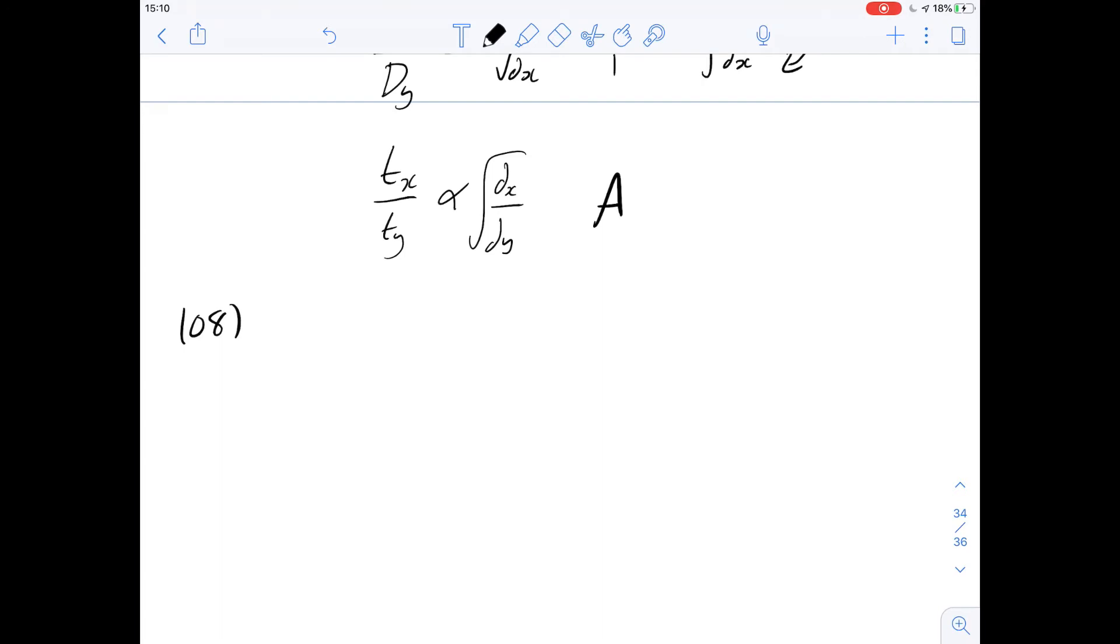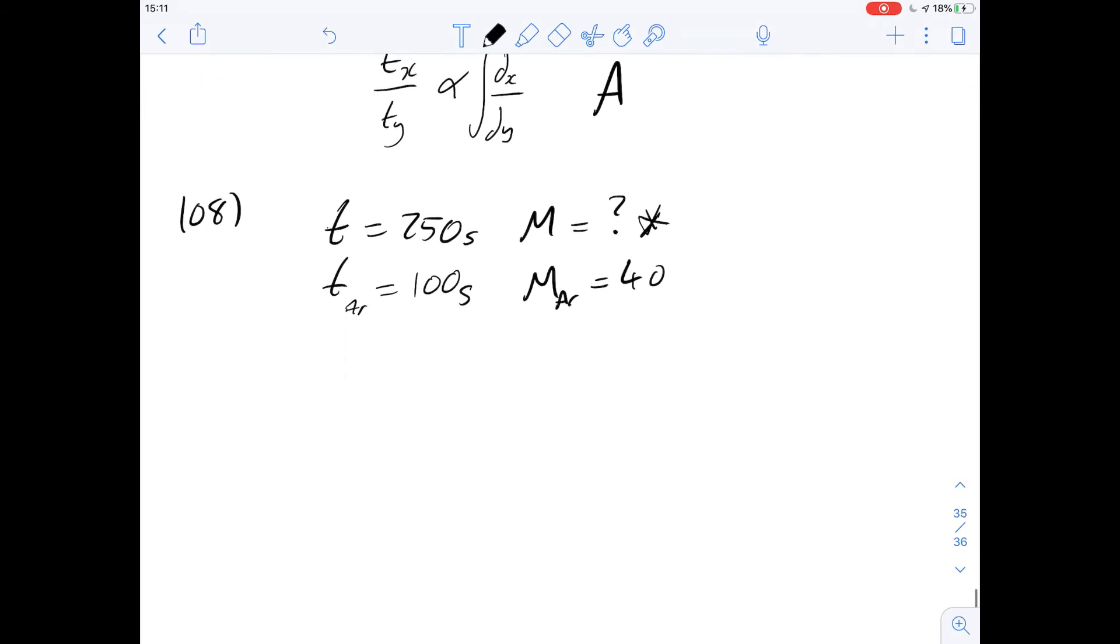108 then says at a certain temperature and pressure 50 milliliters of a gas whose molecular formula is unknown took 250 seconds. So we're going to say t is going to be 250 seconds here, and then under precisely the same conditions 50 milliliters of argon took 100 seconds. So the time for argon is 100 seconds. I think it's useful always just to write down what information you already know. The atomic mass of argon is going to be 40 and the mass here is unknown and that's what we're going to try and work out.